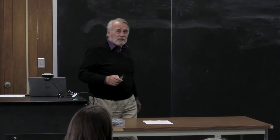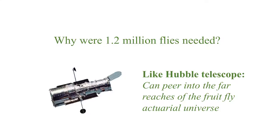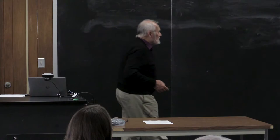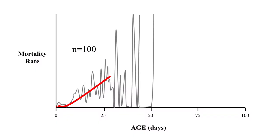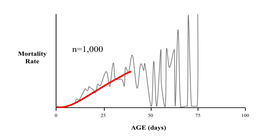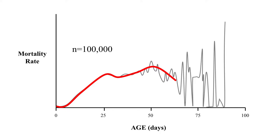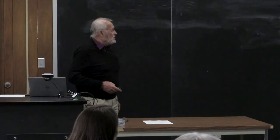Why did we need 1.2 million flies? I like to call it the Hubble telescope of the actuarial world — you can peer into the far reaches of the actuarial universe when you have big numbers. With 100 flies the data bounces around; with 1,000 flies you still run out too quickly; but with 100,000 you can make definitive statements about the true trajectory. You could never do this with mice — you'd never get to a million.